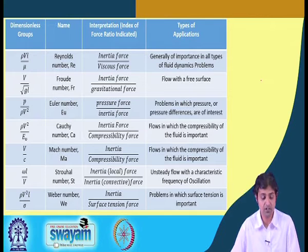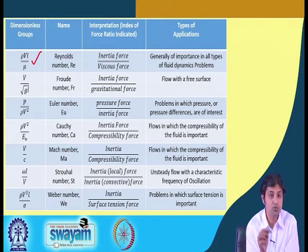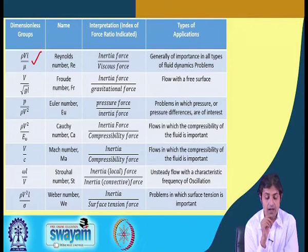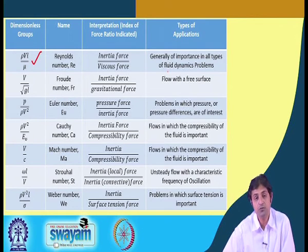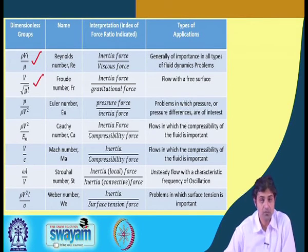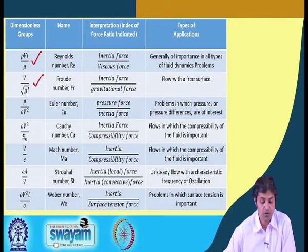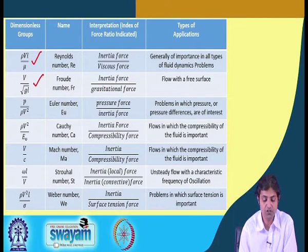There are some very famous dimensionless numbers. The most important is Reynolds number, written as rho-V-L divided by mu. By definition it is the ratio of inertia force to viscous force, and it is very important in all types of fluid dynamics problems. Another is Froude number, given by V divided by the square root of gL. Froude number is the ratio of inertial force to gravitational force, and Reynolds number is inertial force to viscous force.